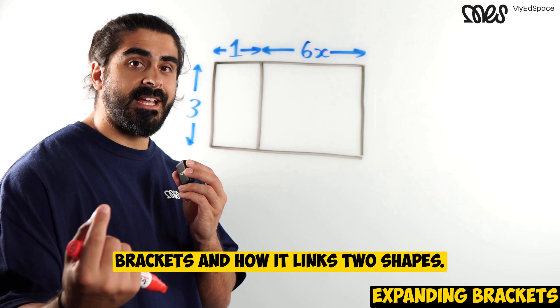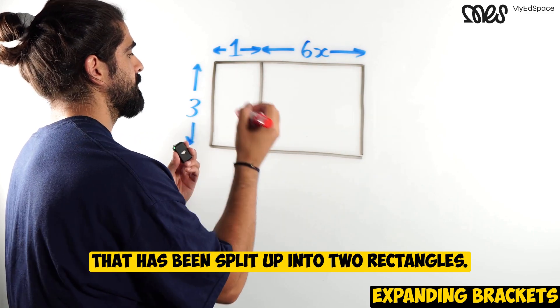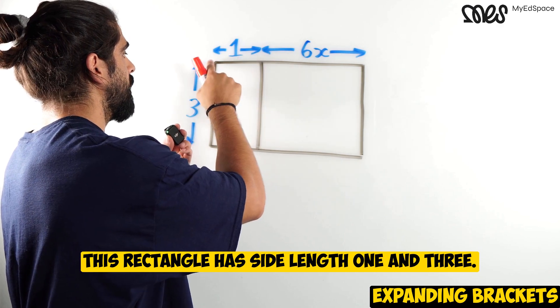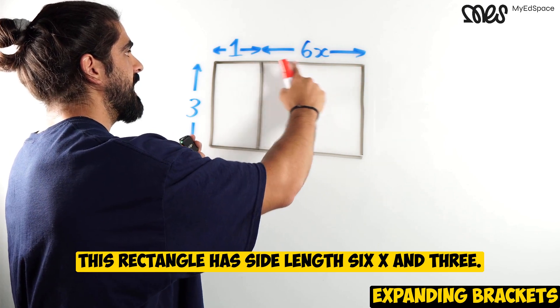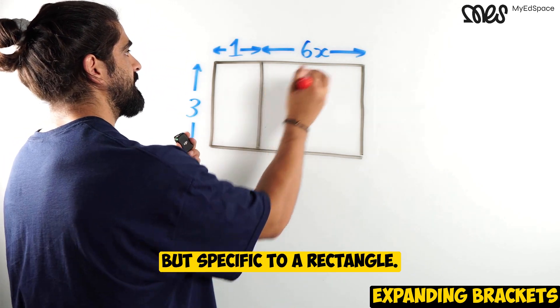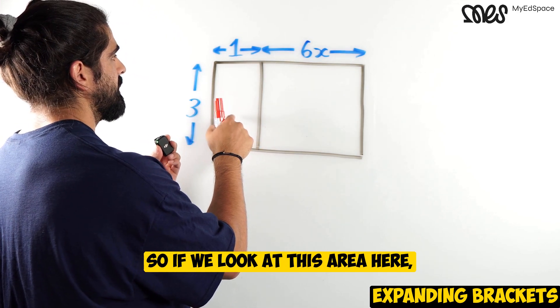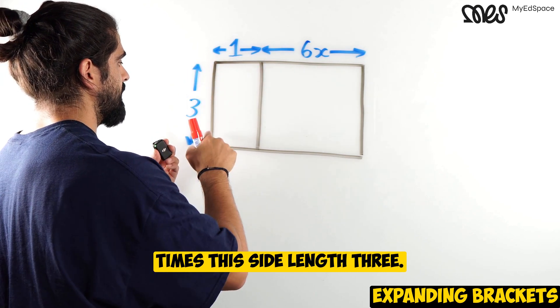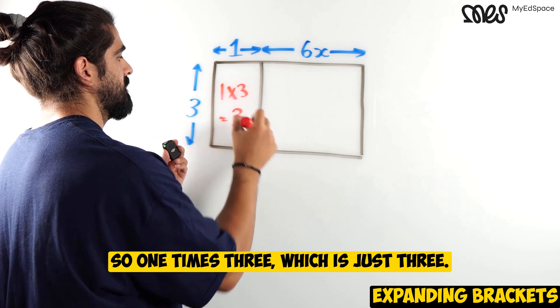Let's take a look at expanding brackets and how it links to shapes. So on the board, I have a rectangle that has been split up into two rectangles. This rectangle has side length 1 and 3. This rectangle has side length 6x and 3. So it's a general situation, but specific to a rectangle with these lengths. I'm going to find the area. So if we look at this area here, it would be this side length 1 times this side length 3. So 1 times 3, which is just 3.